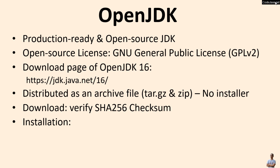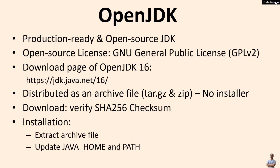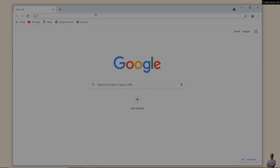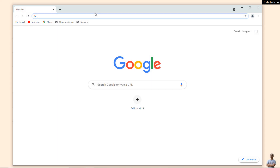To install OpenJDK, you need to extract the archive file and then update the system environment variables JAVA_HOME and PATH manually. All right, let's head over to the official download page of OpenJDK 16 at jdk.java.net/16.